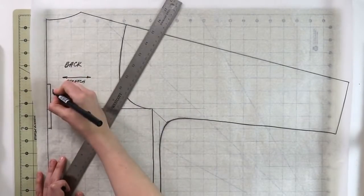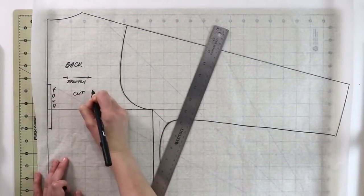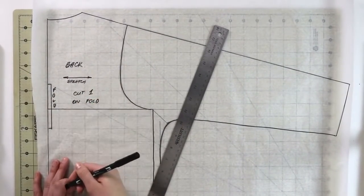And that's it. Your back pattern piece is done and dusted. Now we need to make two small adjustments for the front pattern piece and you'll be off and running with creating your beautiful designs with this new top pattern.